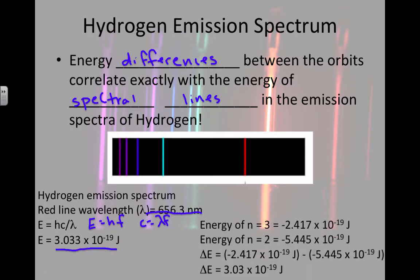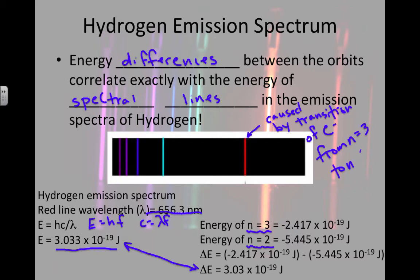When we do that, it's going to be equal to the energy of an electron at energy level three minus the electron at energy level two. When we take the difference of those two, we get the same as a red line. What Bohr deduced from this information is that the red line is caused by the transition of the electron from energy level three to energy level two. When it goes from a higher energy to a lower energy, it's releasing that photon of light and that particular photon has the wavelength that we associate with a color red.